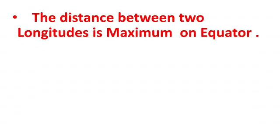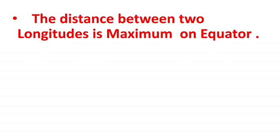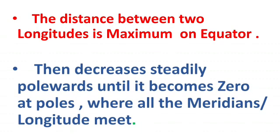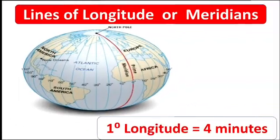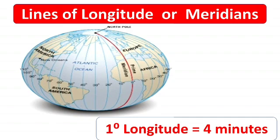The distance between two longitudes is maximum at the equator and then decreases steadily going towards the poles, until it becomes zero at the poles where all the meridians meet. As you can see in the picture, the distance between two longitudes is maximum at the equator and decreases as the lines go toward the poles.